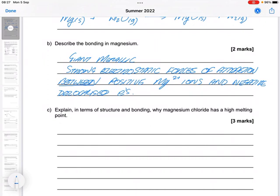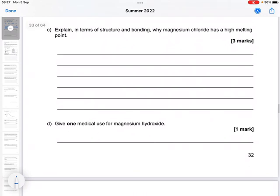Part C: explain in terms of structure and bonding, so obviously sometimes it's required, sometimes it isn't. This one it's stating that it is. Why magnesium chloride has a high melting point. So I'm going to start with the structure and bonding. So this is giant ionic.